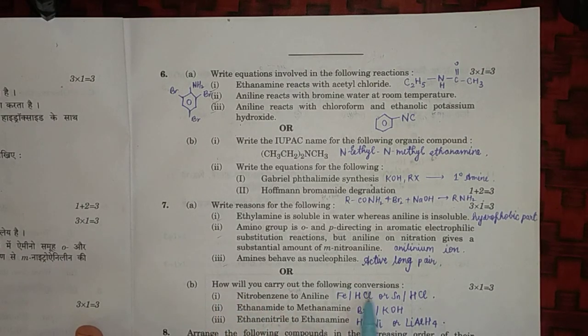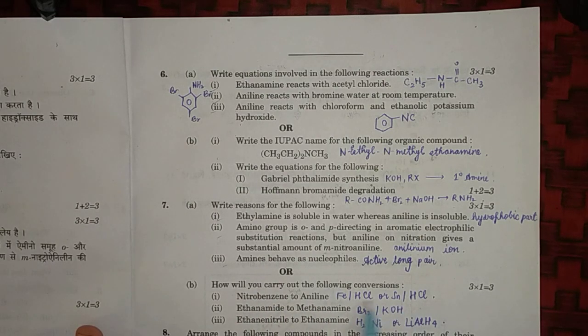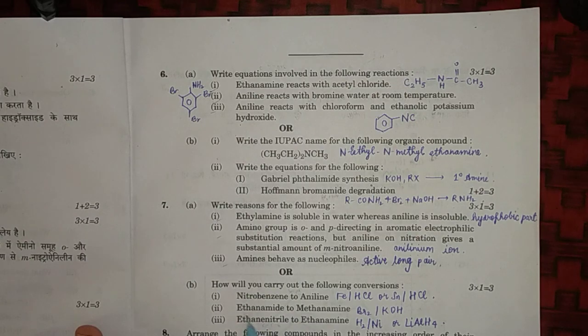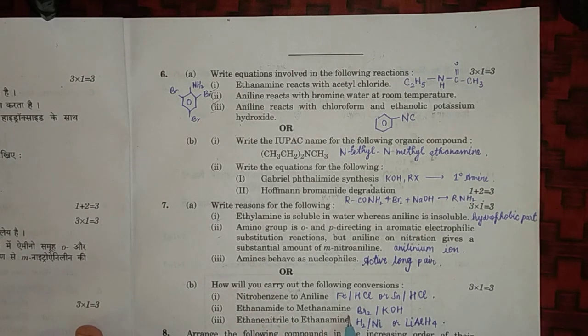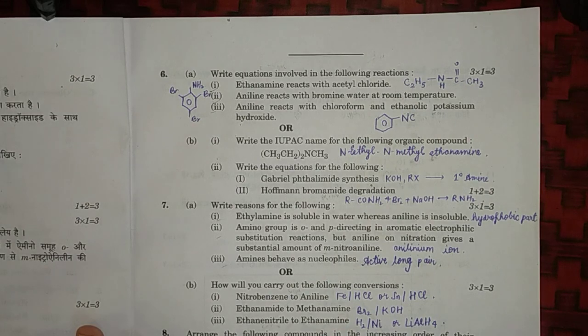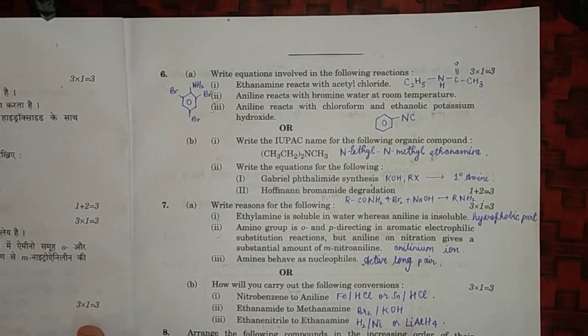How will you carry out the following conversion: nitrobenzene to aniline - it is one step, we'll take Sn/HCl or Fe/HCl. Ethane amide to methane amine - we'll take Br2 or KOH, it is Hoffmann bromamide degradation reaction. Ethane nitrile to ethane amine - will do reduction either by H2 or nickel or LiAlH4.